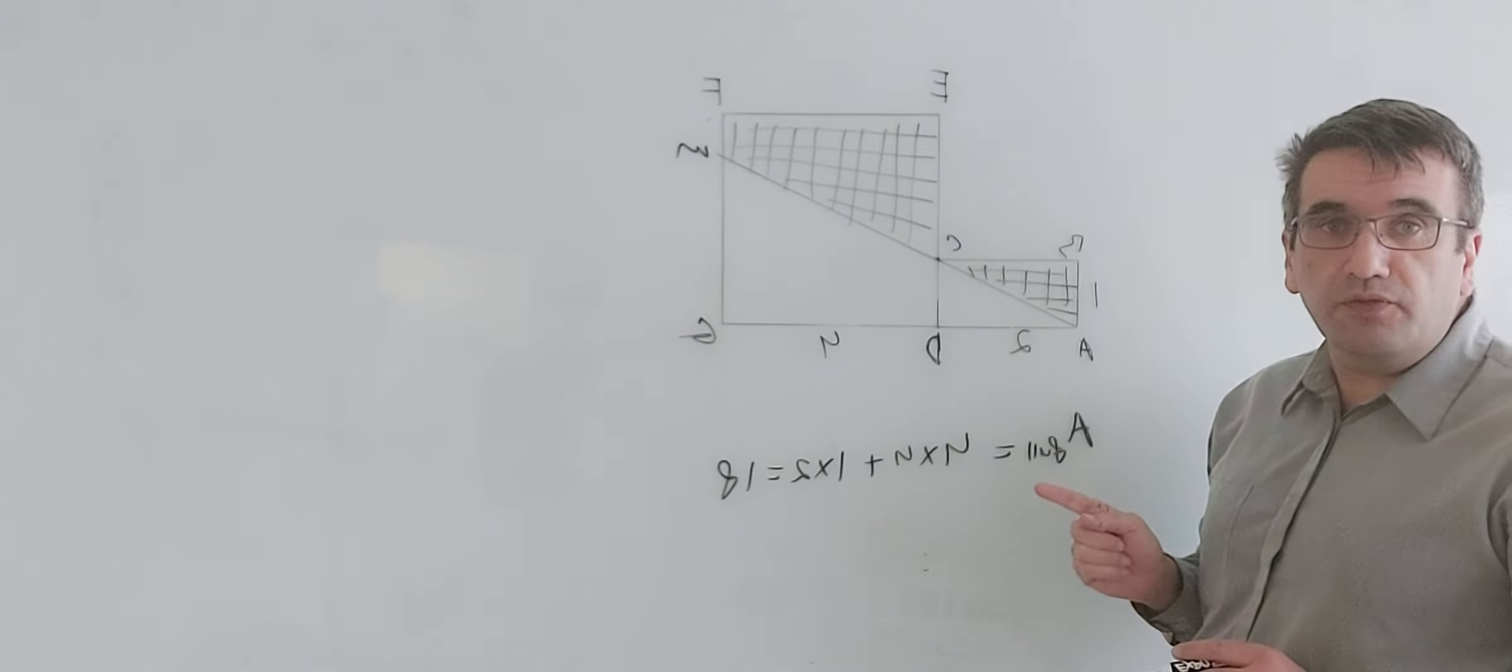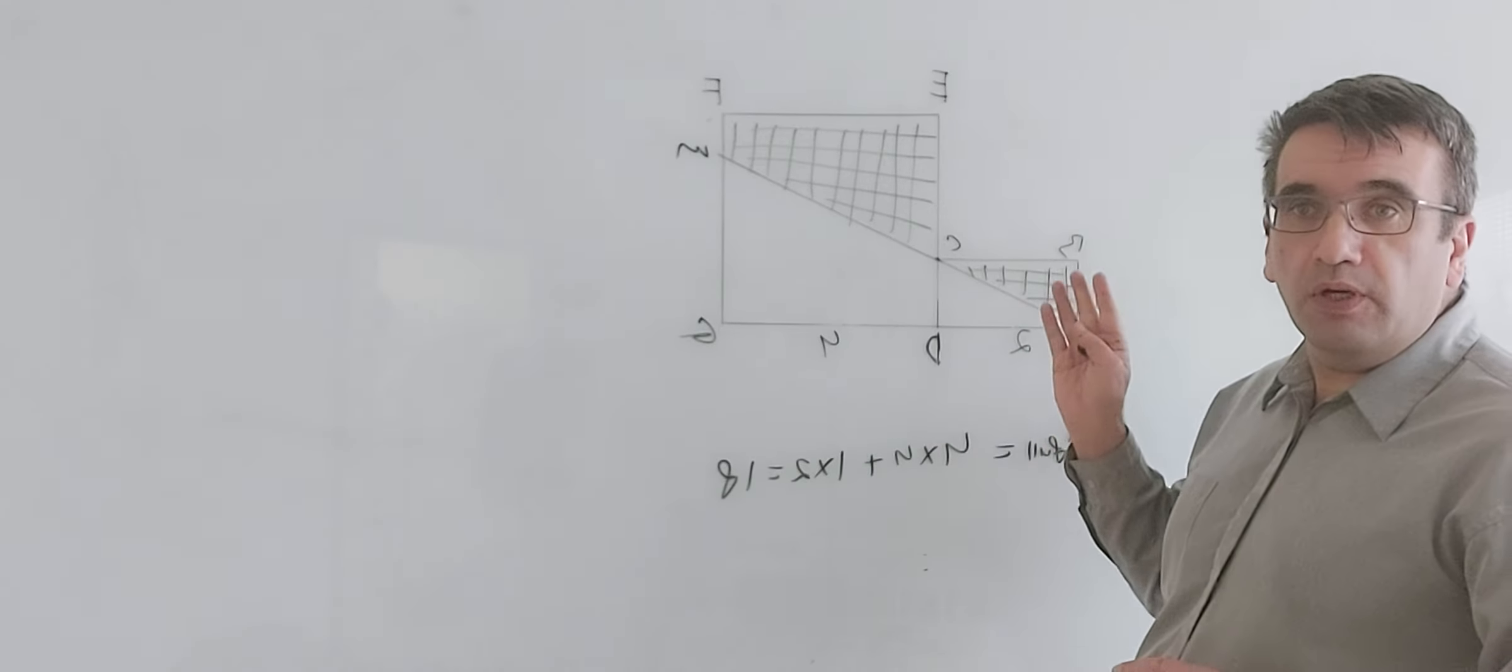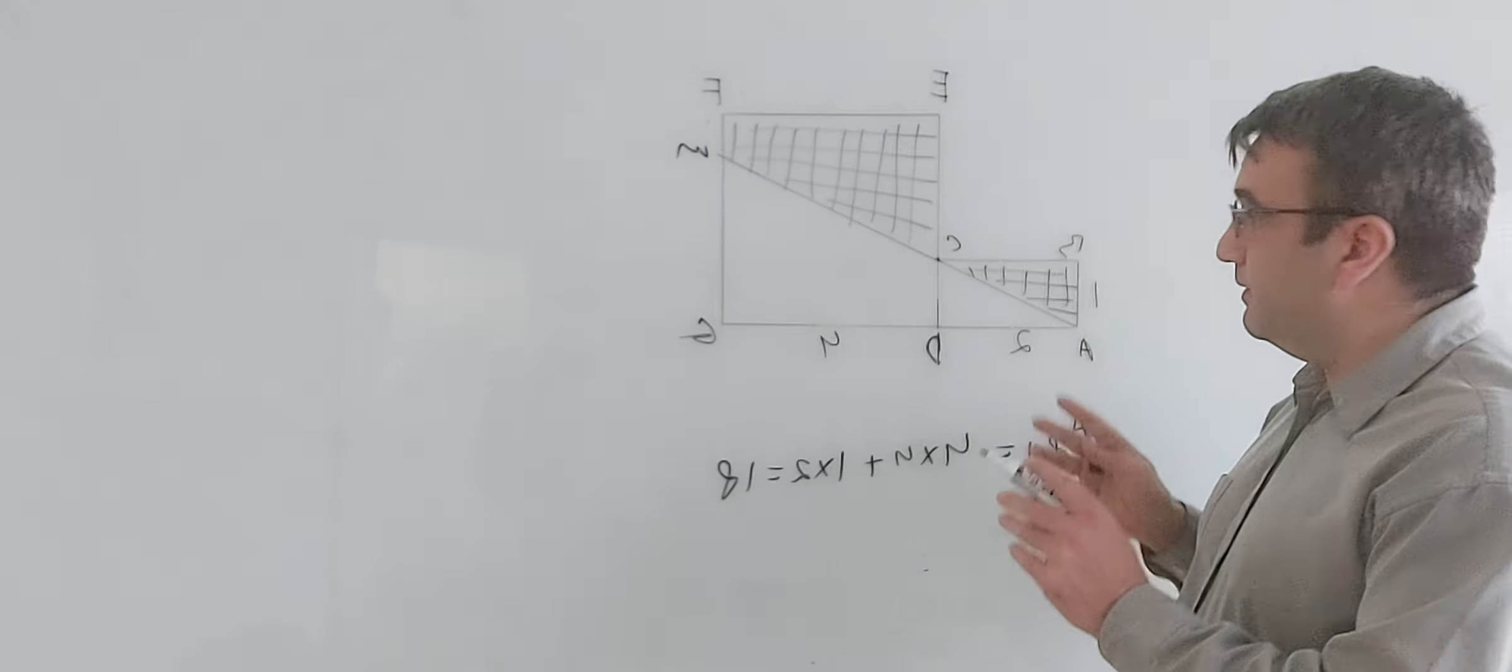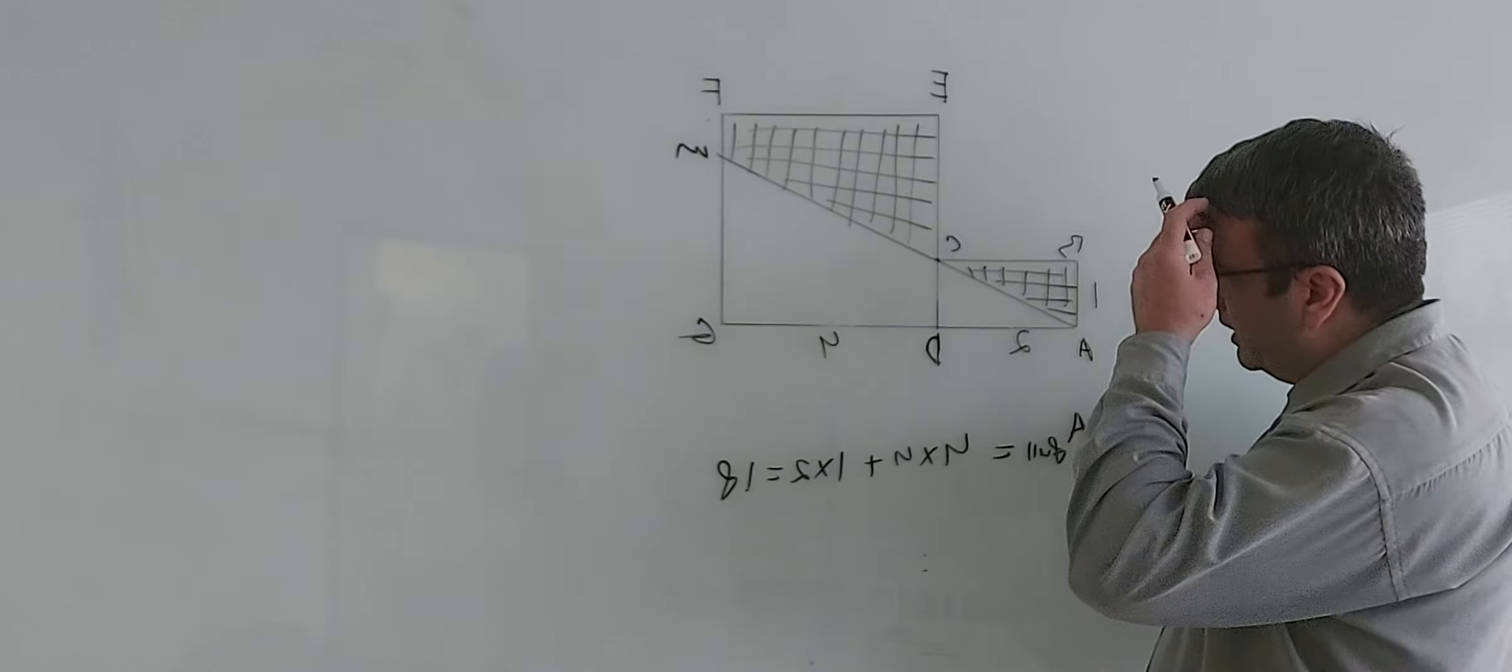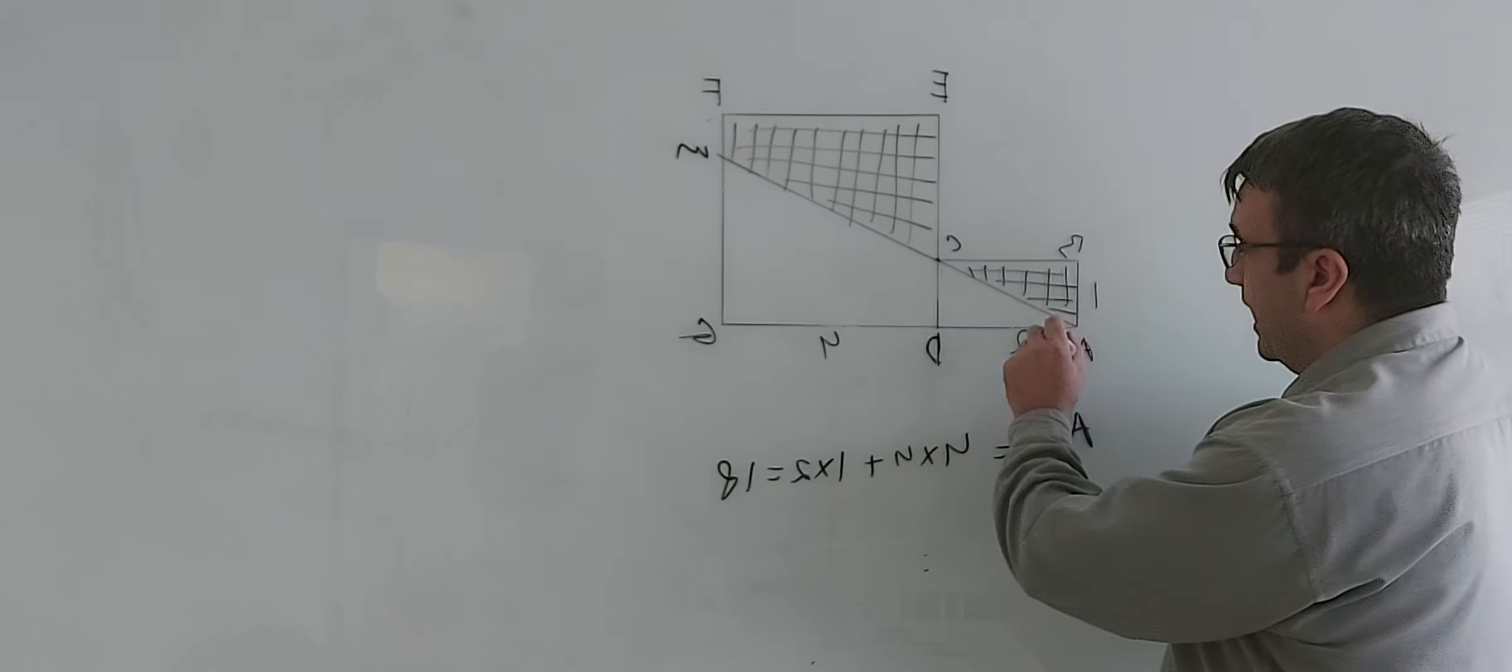And what can we say about these two triangles? We can say that they are similar. Triangles are similar if their angles are equal. So now we're going to show that all angles in these two triangles are the same.